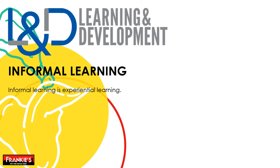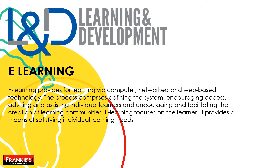Informal learning is experiential learning — people are learning on the job as they go along. E-learning provides for learning via computer, network, and web-based technology. The process comprises defining the system, encouraging access, advising and assisting individual learners, and encouraging and facilitating the creation of learning communities. E-learning focuses on the learner and provides a means of satisfying individual learning needs via digital materials, online courses, and virtual tutoring.